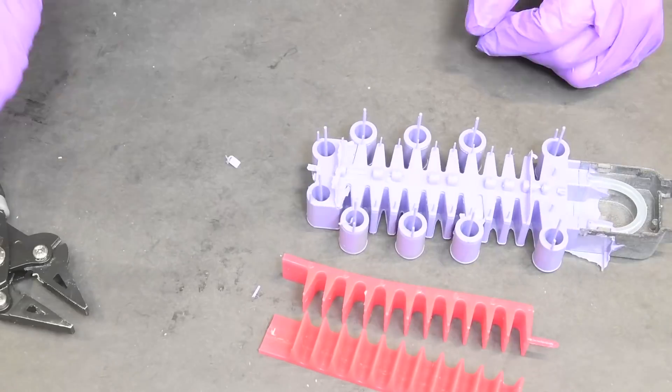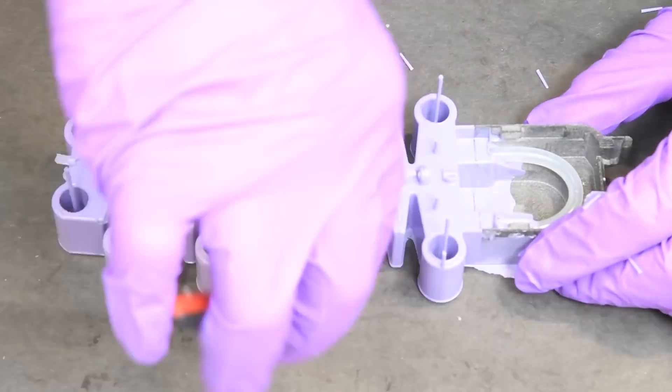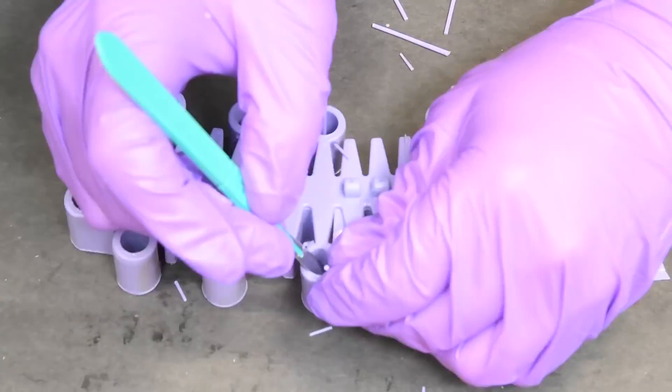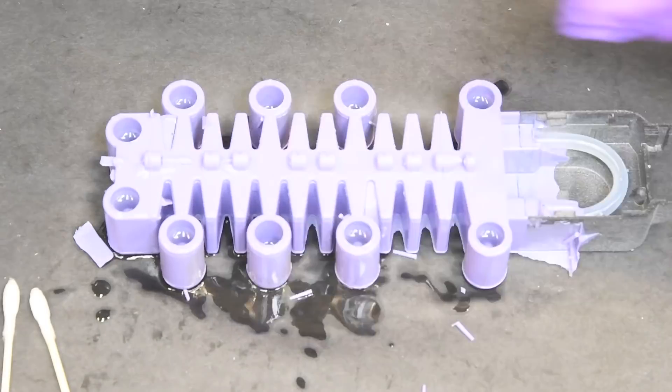Once we have the soft cores removed, we can then clean up the part. We're going to cut off all of the excess material that went through the sprues, and we also need to clean out all of the magnetic actuators with alcohol to make sure it bonds well to the next process.